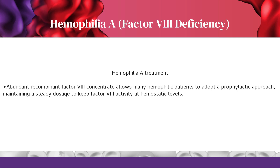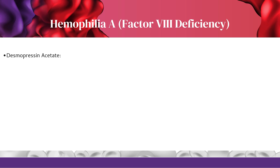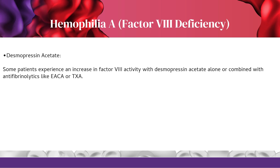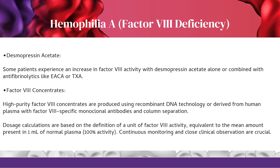Abundant recombinant factor 8 concentrate allows many hemophilic patients to adopt a prophylactic approach, maintaining a steady dosage to keep factor 8 activity at hemostatic levels. Prophylactic treatment, although initially more costly, proves resource-efficient by preventing the adverse effects of recurrent hemorrhages. Some patients experience an increase in factor 8 activity with desmopressin acetate alone or combined with antifibrinolytics like EACA or TXA. High purity factor 8 concentrates are produced using recombinant DNA technology or derived from human plasma with factor 8 specific monoclonal antibodies and column separation. Dosage calculations are based on one unit of factor 8 activity, equivalent to the mean amount in 1 mL of normal plasma (100% activity). Continuous monitoring and close clinical observation are crucial.